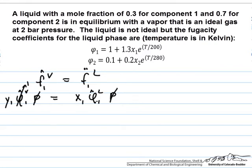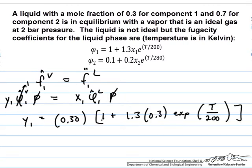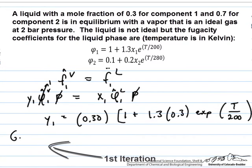We begin with the expression for y1 using the fugacity coefficient. We have 1 plus 1.3 times x1, which is 0.3, times the exponential of T over 200. For an initial guess of 240 Kelvin, this gives y1 equal to 0.688.